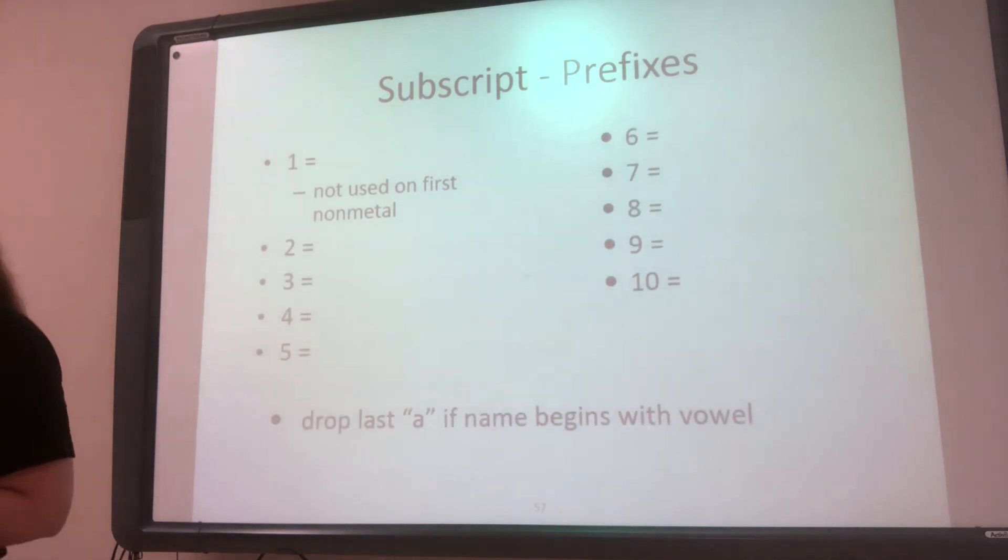One is going to be mono, like I said a second ago, but it's not used on that first non-metal. So if I only have one on that first non-metal, I don't use the prefix mono. Second is di, third is tri, four is tetra, five is penta.